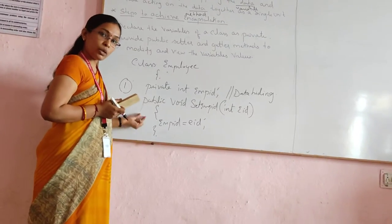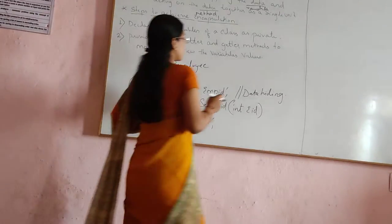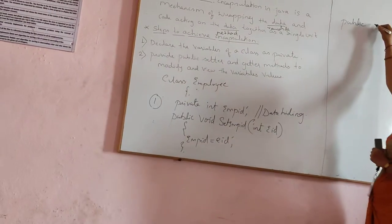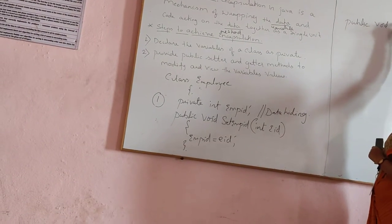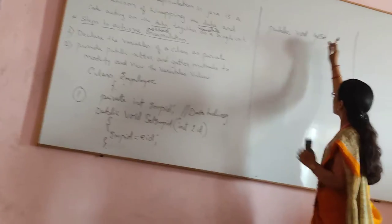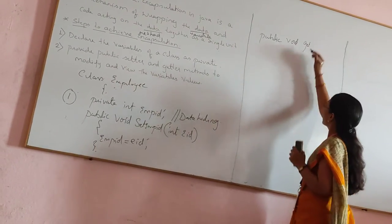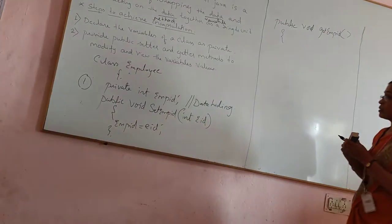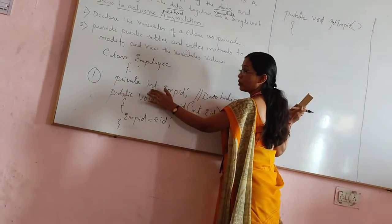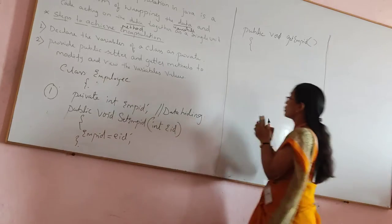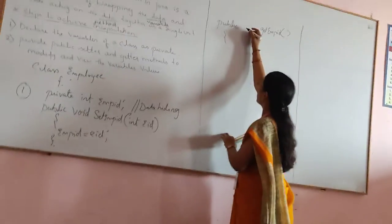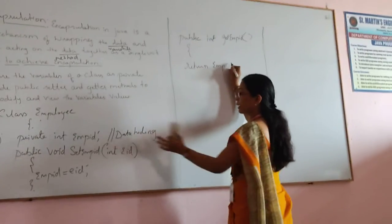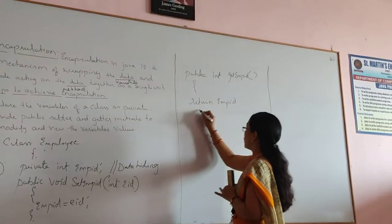Next, in order to view this data, we need a public getter method. So the public getter method: public int getEmployeeId. Since I have declared an integer type data variable as private, the return type of this method should be of integer type. Since I want to view this data, we have to return employeeId with the getter method.